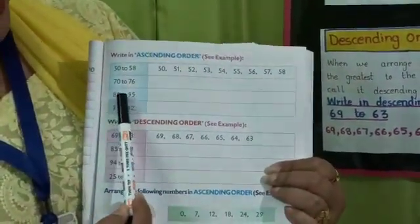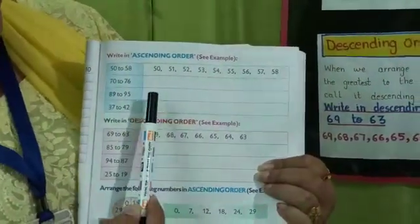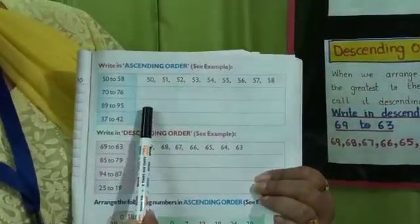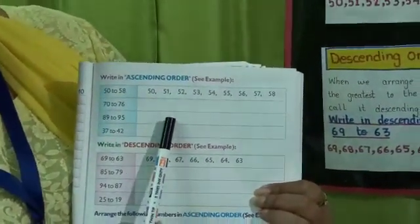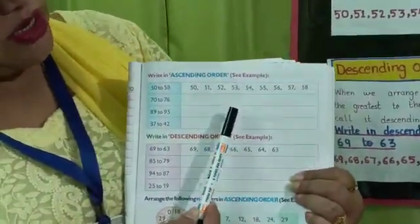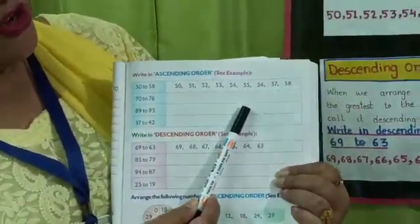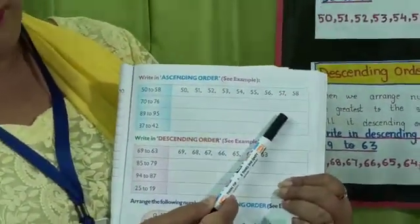89 to 95. We'll write it as 89, 90, 91, 92, 93, 94, 95.